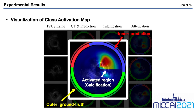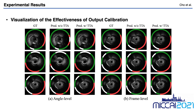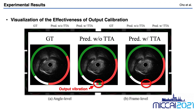We evaluated the output calibration both qualitatively and in terms of performance improvement. We visualized the results of NeuPAC with test-time augmentation, comparing against NeuPAC without test-time augmentation. This qualitative result shows that output calibration using test-time augmentation successfully solved the issue of output vibration, and this achievement is also important in clinical situations.